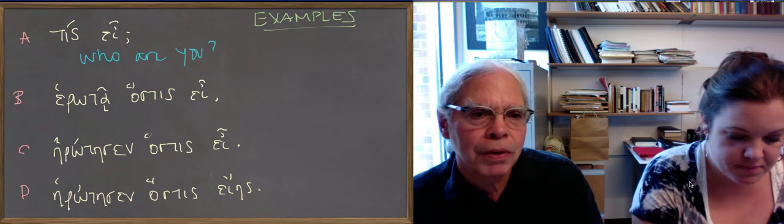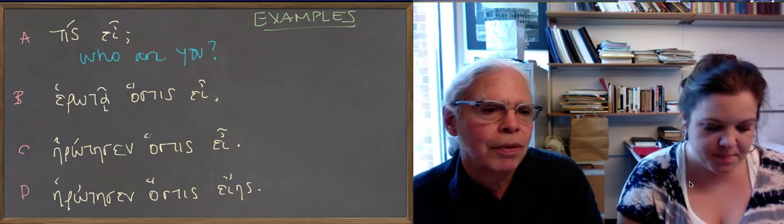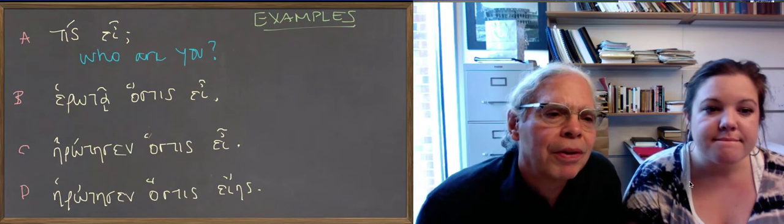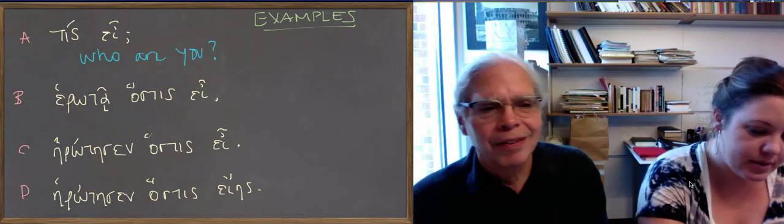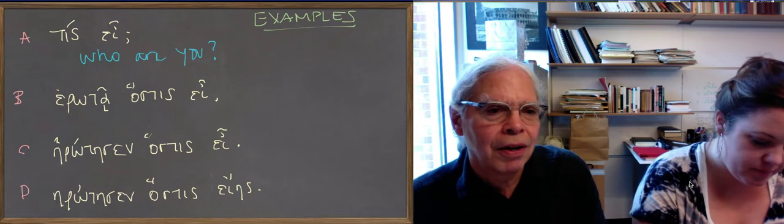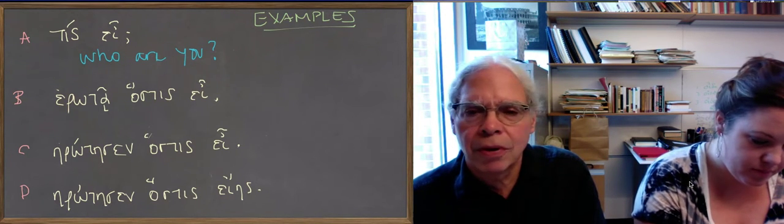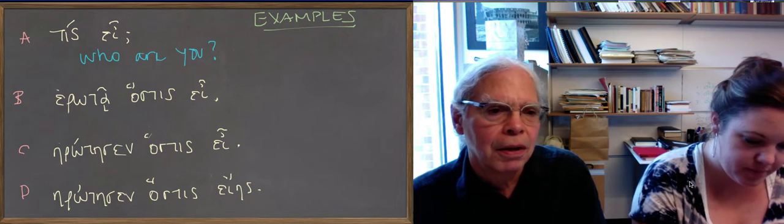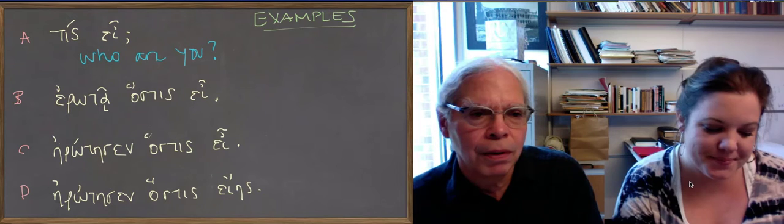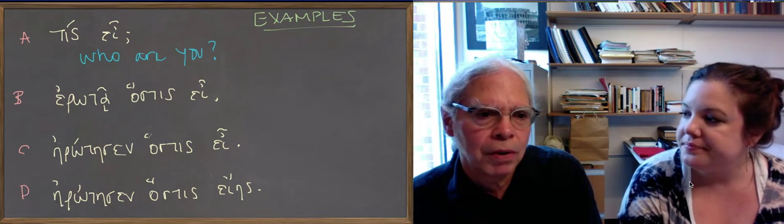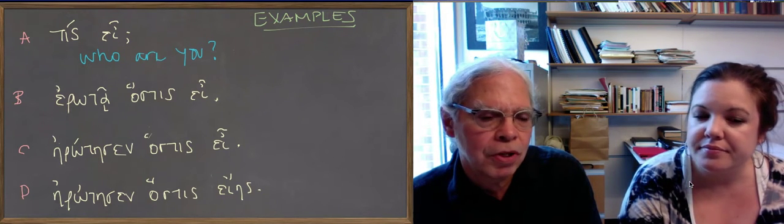If you then embed this question in a sentence with—it looks like a rough breathing on erota but it's a smooth one. Okay. Erotao is the verb to ask somebody something in Greek. Erotao, so it's a contract, an alpha-contract verb in imperfective aspect.